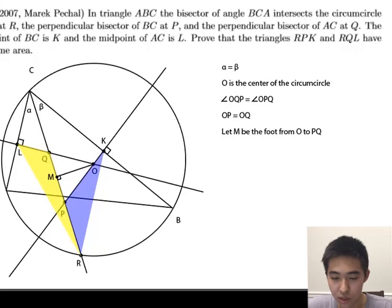This means that CQ is equal to CM minus QM, which is equal to RM minus PM, which is equal to PR. So this implies that CQ is equal to PR. Similarly, we have that CP is equal to QR.